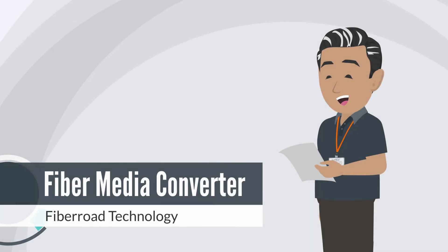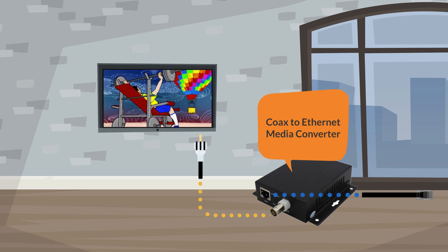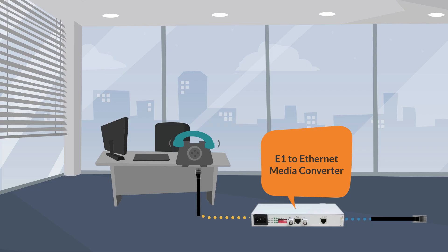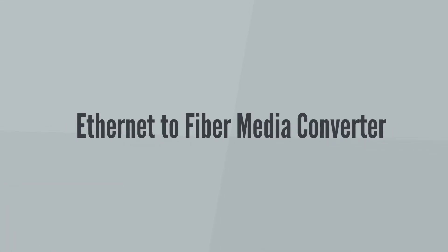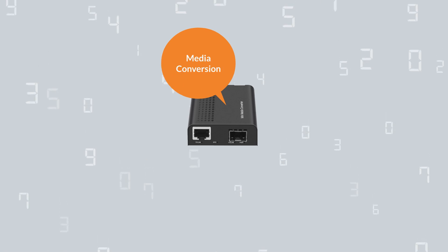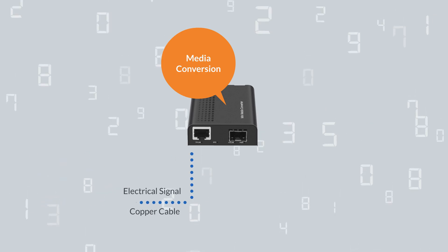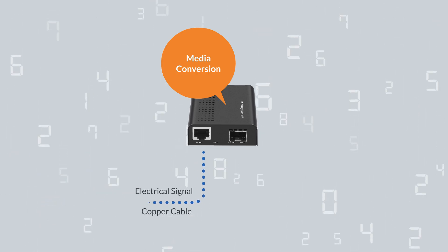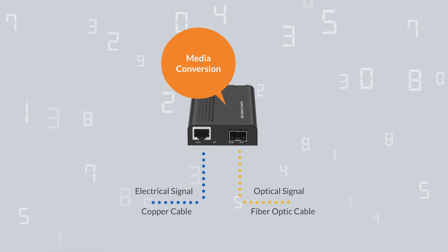Let's review about Fiber Media Converter. A media converter is a networking device that transparently converts Ethernet or other communication protocols from one cable type to another type. Among media converters, the most often used type is a device that converts the electrical signal utilized in copper unshielded twisted pair network cabling to light waves used for fiber optic cabling.